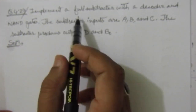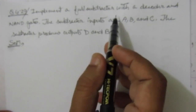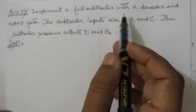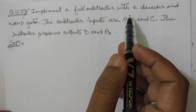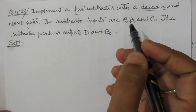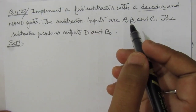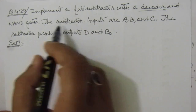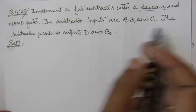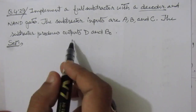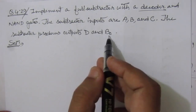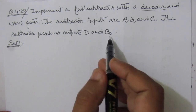The problem is to implement a full subtractor with a decoder and NAND gates. That means we have to use a decoder — for a full subtractor we will have three inputs and two outputs: one is the difference and one is the borrow. The subtractor inputs are A, B, and C, and the outputs are difference D and borrow-out B0.